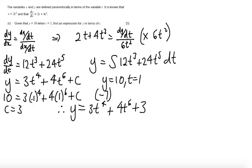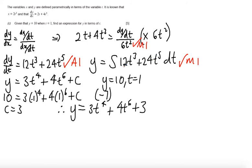In Part C there is a method mark for using the definition dy/dx equals (dy/dt)/(dx/dt) and rearranging, and an answer mark for the correct expression for dy/dt. There is then a method mark for integrating dy/dt to find y, and an answer mark for getting y equals 3t to the power of 4 plus 4t to the power of 6 plus c. Finally there is an answer mark for using the initial conditions to find the constant of integration equals 3.